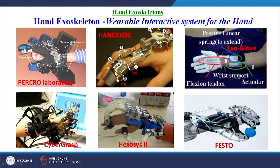What is a hand exoskeleton? A hand exoskeleton is a wearable interactive system for the hand, owned by patients or elderly people to assist themselves. Various hand exoskeletons have been developed to help elderly people as well as stroke patients who have lost control of their hand. Examples include Hand Exos, Exosys Prototype 2, CyberGrasp, and the ExoGlove — some of the famous exoskeletons for the hand.